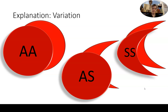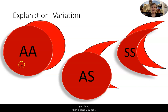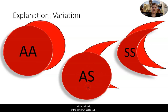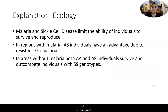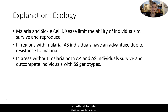Getting into our explanation: there are three genotypes in both types of environments, with and without malaria. You have the AA genotype for normal healthy hemoglobin, the AS genotype for sickle cell trait or carrier of sickle cell disease, and the SS genotype for a person who has sickle cell disease. For the ecology, malaria and sickle cell disease both limit the ability of individuals to survive and reproduce. Malaria is a parasitic disease that is fatal, and sickle cell disease is a blood disease that is also fatal at times.